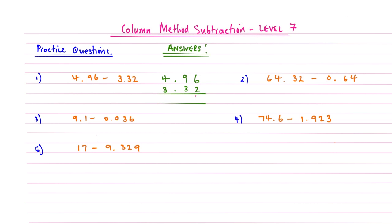So 6 subtract 2, we can do that, that gives me an answer of 4. 9 subtract 3 gives me an answer of 6, lining up the decimal points there, and then 4 subtract 3 gives me 1. So the answer to question 1 is 1.64.